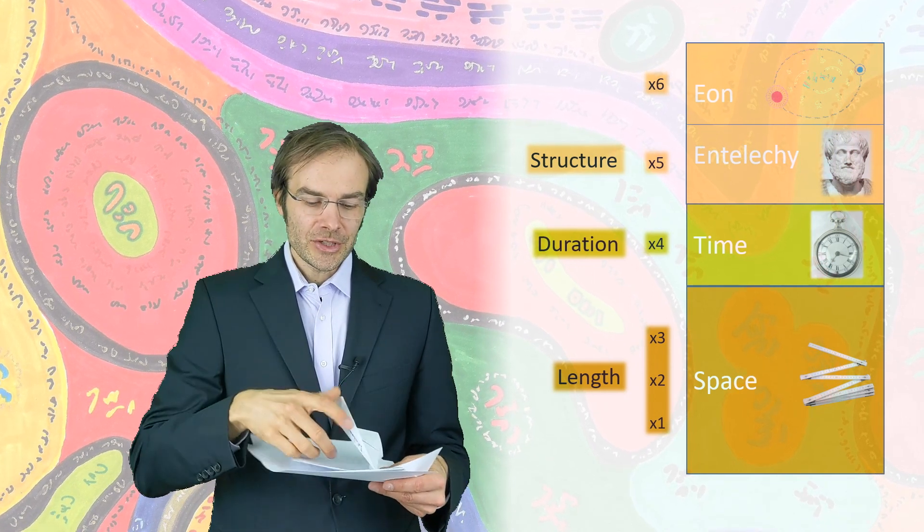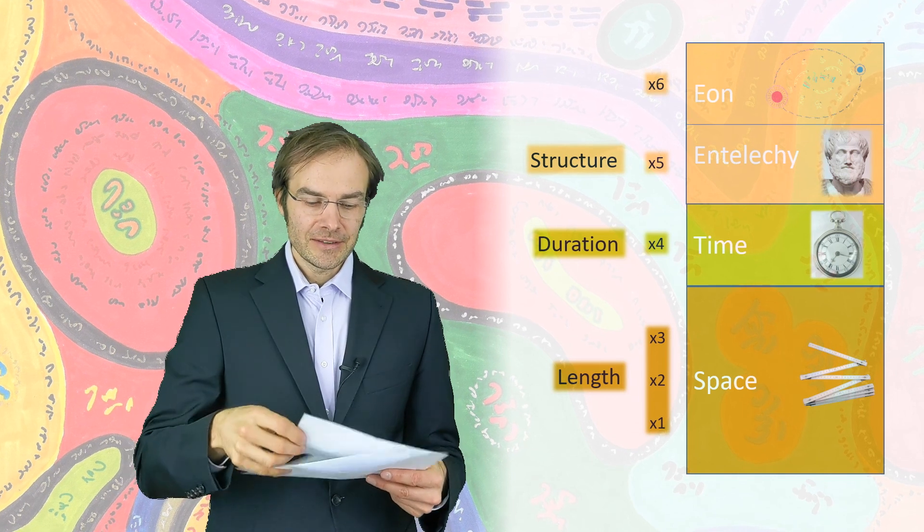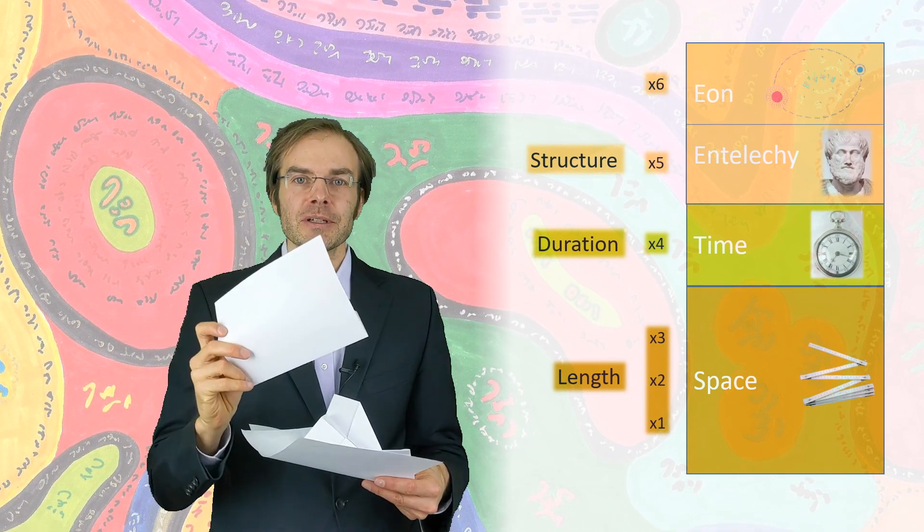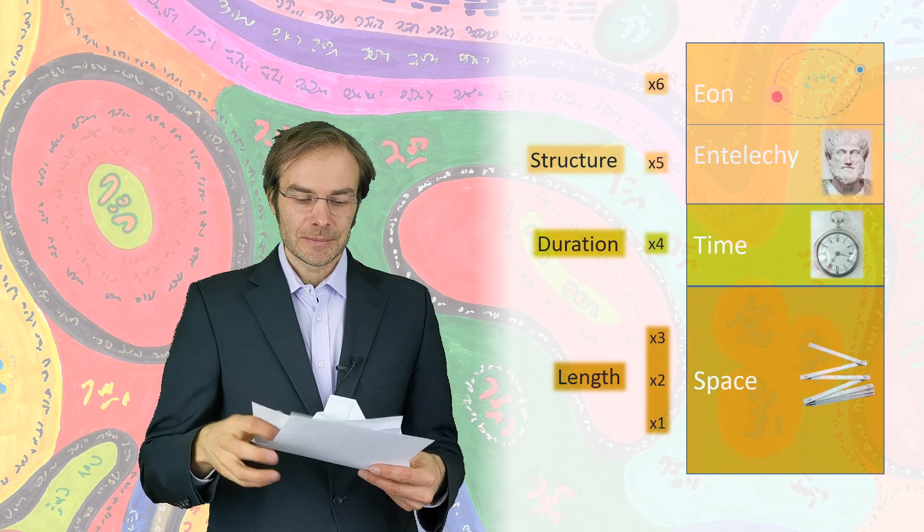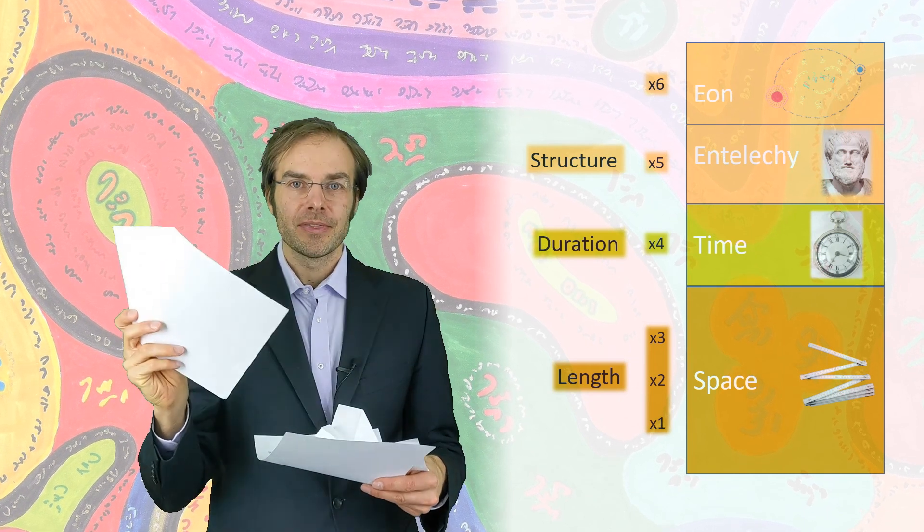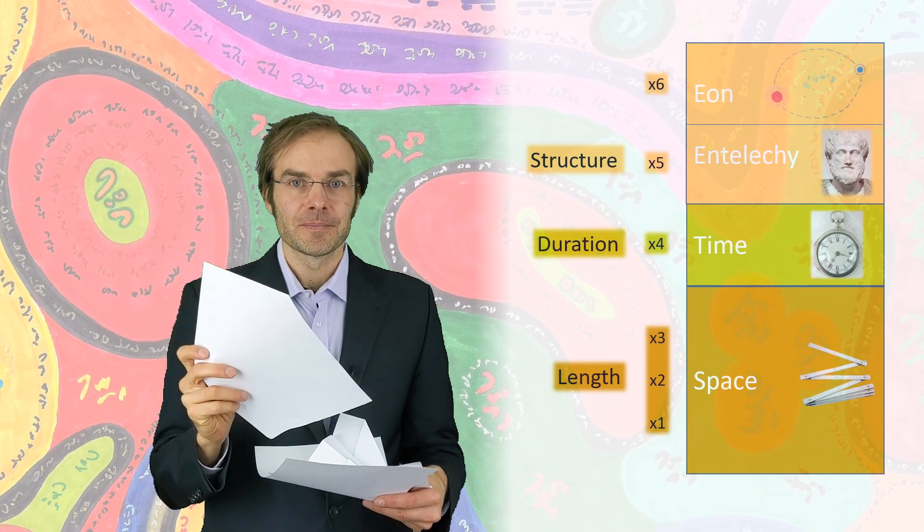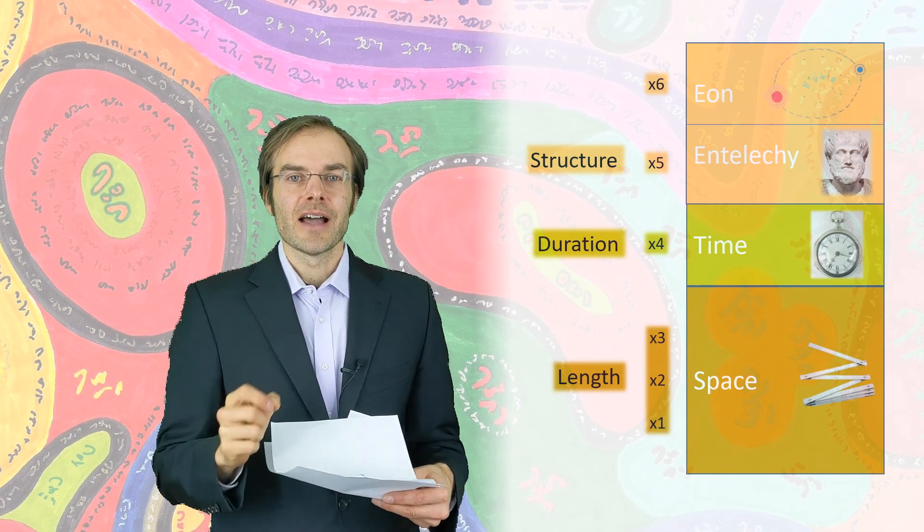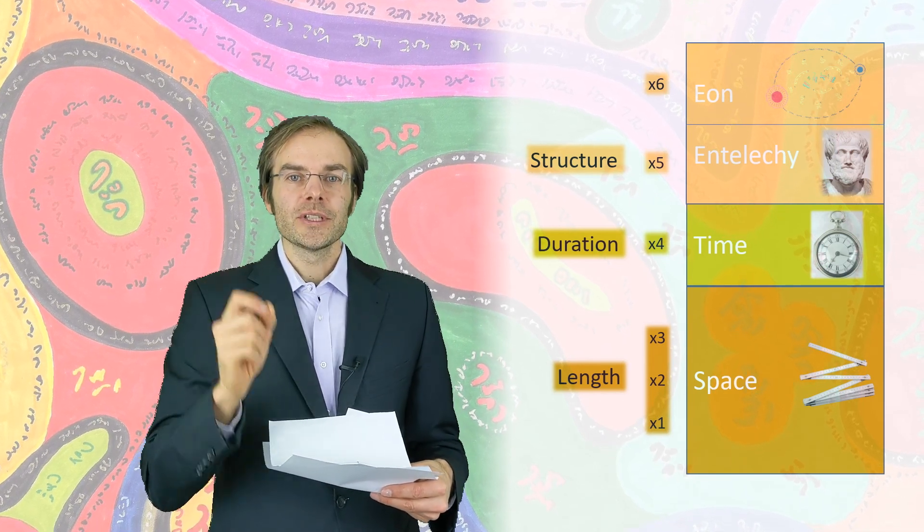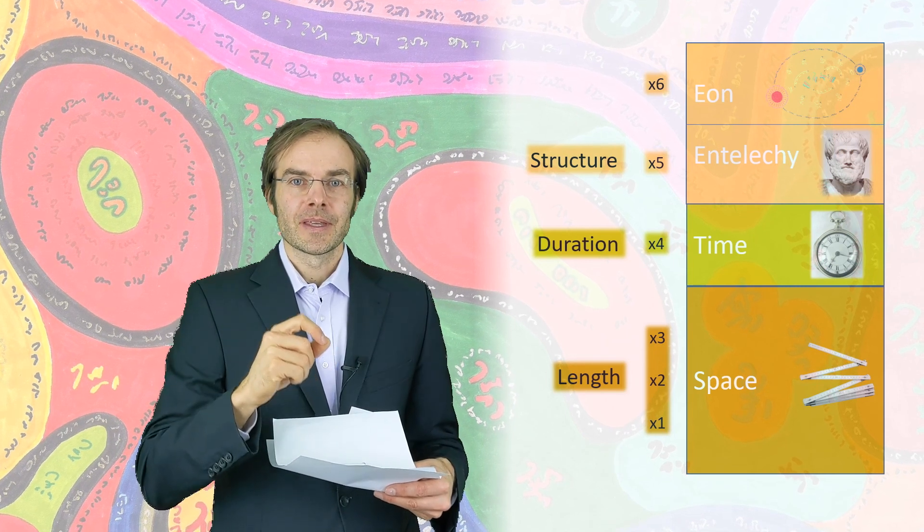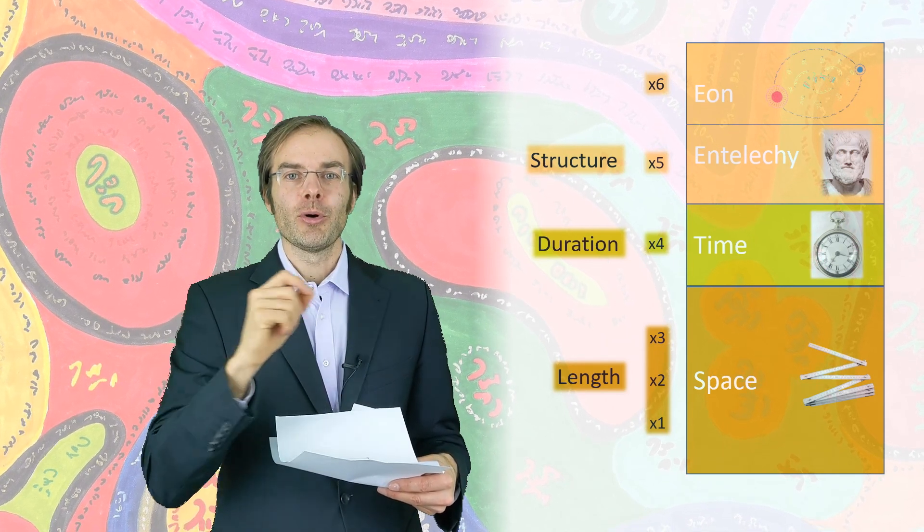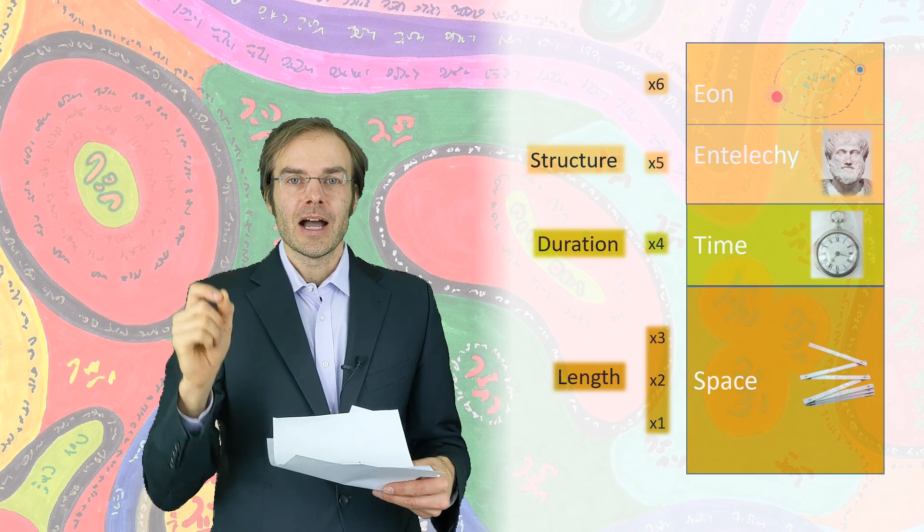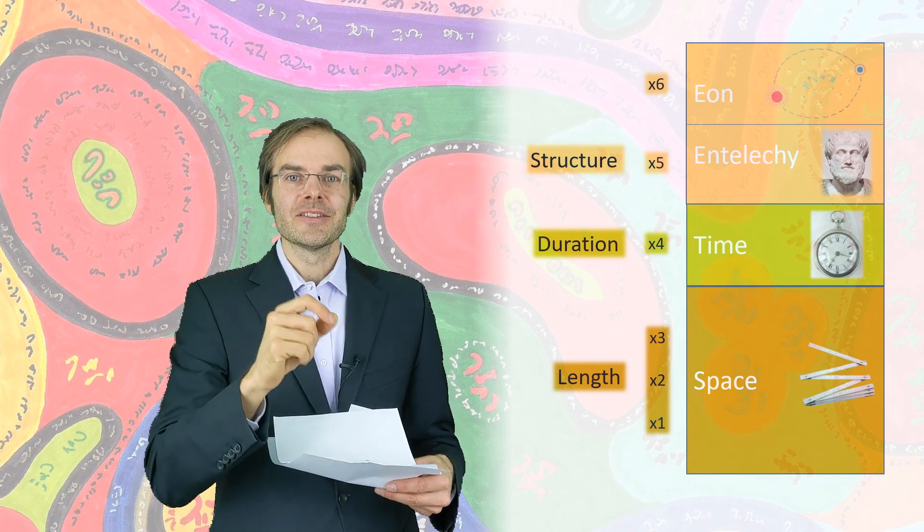You already know that each of these states represents a certain structure, that means a certain coordinate on the axis x5. The axis x6 now, it orders these structures into a meaningful order how they can be implemented in space-time.